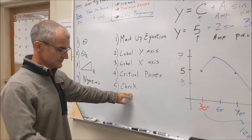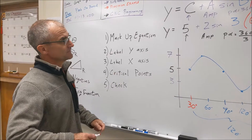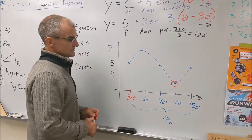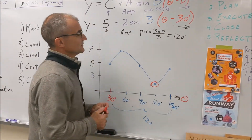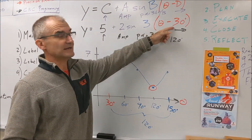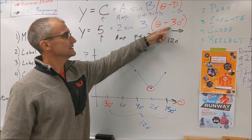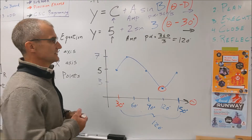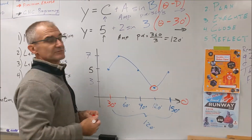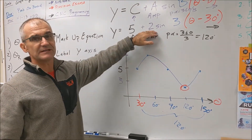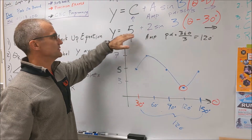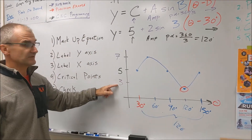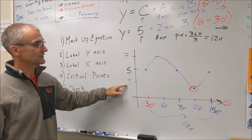Lastly, check a value. I pick any point on the graph — let's say theta equals 120. So 120 minus 30 is 90; 90 times 3 is 270; sine of 270 is negative 1; negative 1 times 2 is negative 2; negative 2 plus 5 is 3. So at 120, I should be at 3, and I am. Pick a point and plug it in.